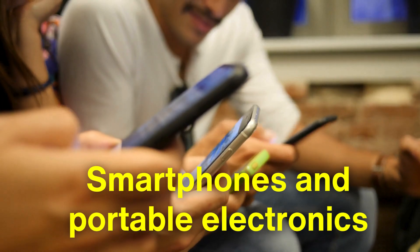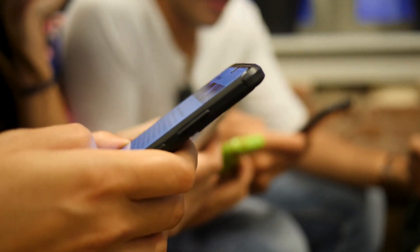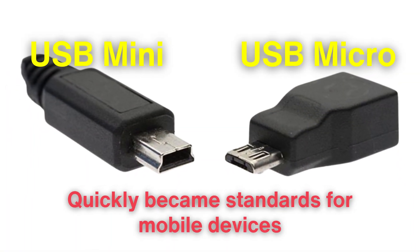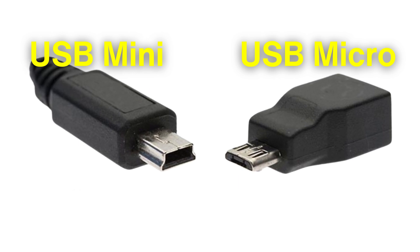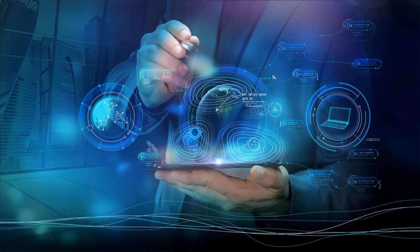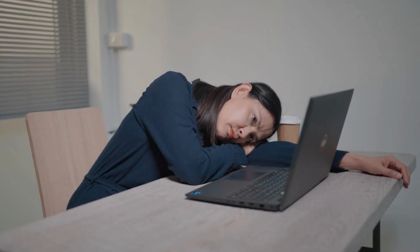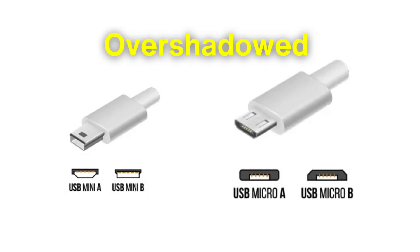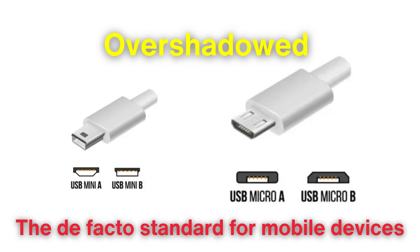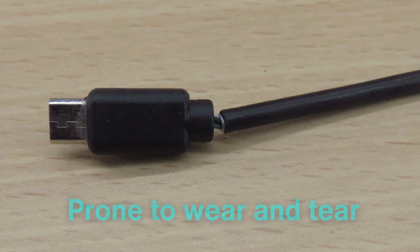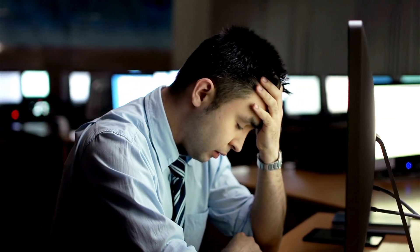The advent of smartphones and other portable electronics accelerated the fragmentation of USB connectors. USB Mini and Micro quickly became standards for mobile devices, each iteration smaller and more streamlined than the last. Technology was evolving toward miniaturization, and so too were its connectors. However, the proliferation of these types brought new frustrations. Mini USB was soon overshadowed by Micro USB, which became the de facto standard for mobile devices for much of the 2010s. But while Micro USB promised compactness, its design was prone to wear and tear. Consumers began to grumble: why couldn't there be one universal connector that worked across all devices?